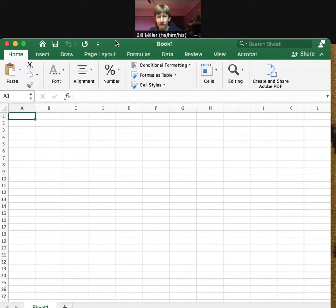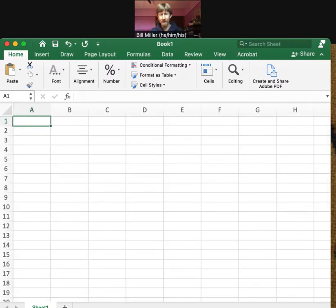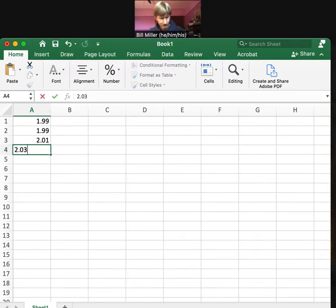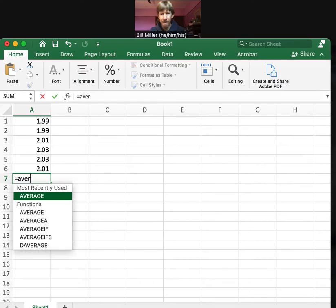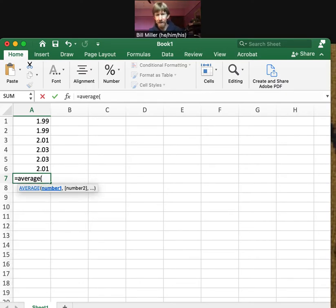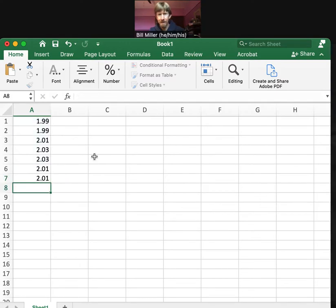Let me bring that so that it's on the screen. I'll make it a little bigger, because all I'm going to do is I'm going to take my six values: 1.99, 1.99, 2.01, 2.03, 2.03, 2.01. Actually I'll just do my average here too. Let me type in average, open a parenthesis, just to double check all six of those, close the parenthesis, hit return. That's my average.